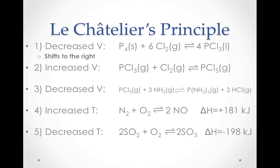How would increasing the volume affect the equilibrium for number 2? Increasing volume decreases the pressure, so the reaction shifts towards the side with the most moles of gas — that is, to the left side, which has 2 moles of gas compared to 1 mole of gas on the right side of the balanced equation.